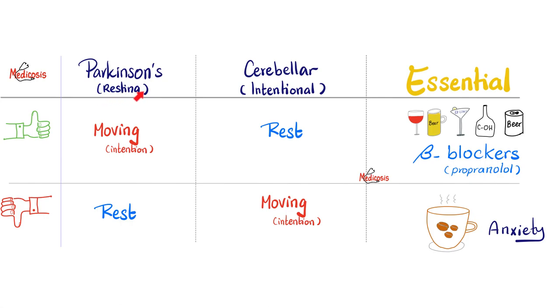Parkinson's tremor is a resting tremor, which means when I'm resting and doing nothing, the tremor is worse. However, as I intend to move my hand and actually move it to grab something, the tremor disappears.